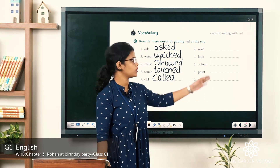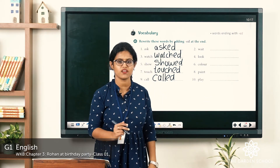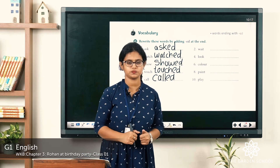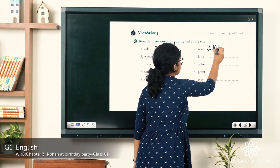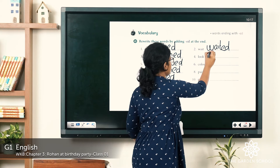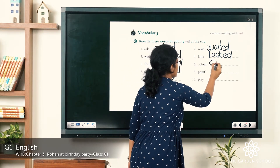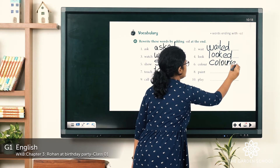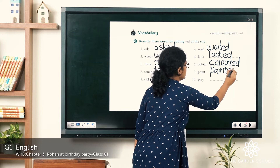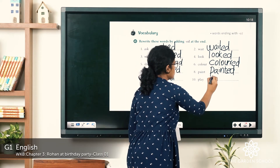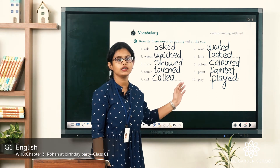Can you do the remaining words? Pause the video, write the answers by adding '-ed,' then play again to check. Let's see the answers: 'wait' becomes 'waited'; 'look' becomes 'looked'; 'colour' — C-O-L-O-U-R-E-D — becomes 'coloured'; 'paint' — P-A-I-N-T-E-D — becomes 'painted'; and 'play' becomes 'played.' This is how you rewrite words by adding '-ed.'